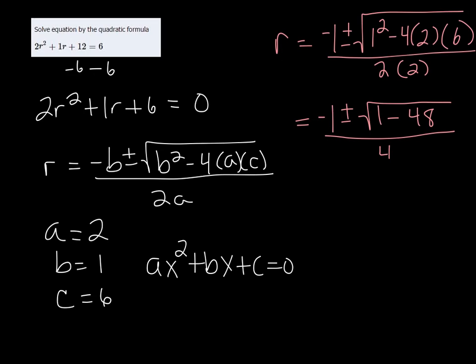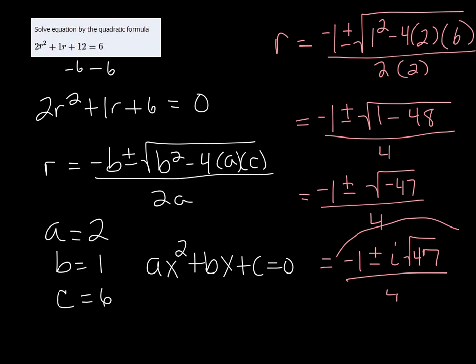Now 1 - 48 is -47, but we can't leave a negative in the square root so we're going to take that out and it's going to be -1 ± i√47 all over 4. And since we can't simplify the square root of 47, we can just leave it like that.